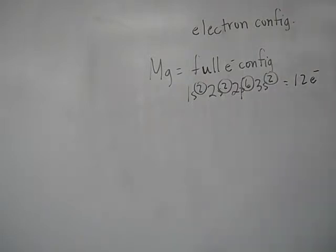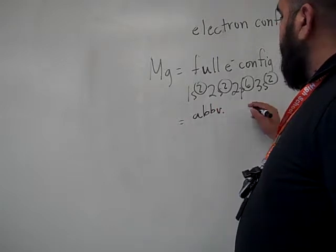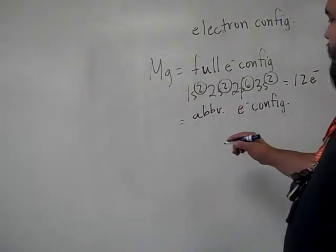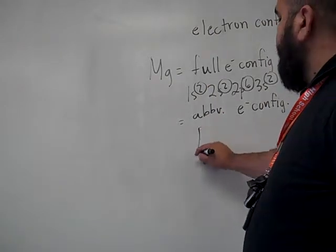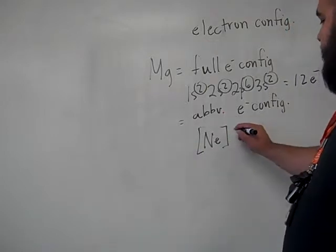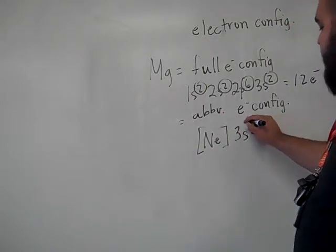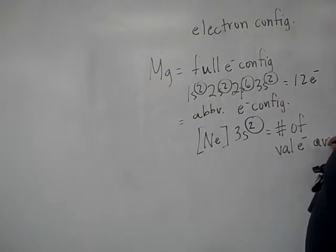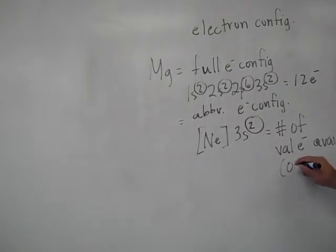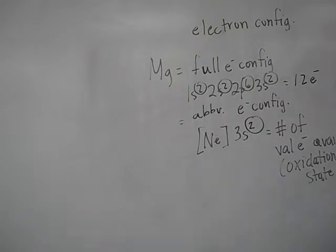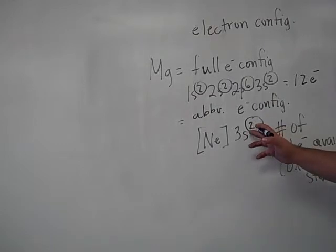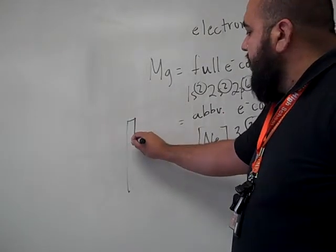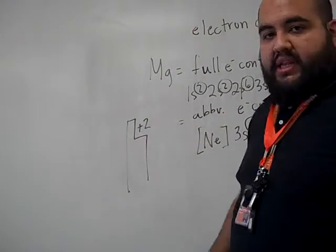Now, if you do what's called the abbreviated electron configuration, you will write the last known noble gas which is neon. Then it's 3s2. This number right here is the number of valence electrons available and also it is your oxidation state. I hope you can read that. If not, I'll redo it. But when you do the abbreviated configuration, this value is the reason that magnesium on the periodic table has a charge of plus 2, and so does beryllium and so on and so forth.